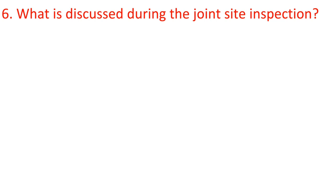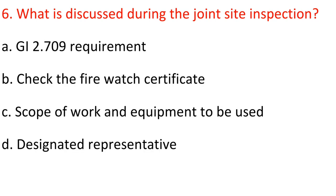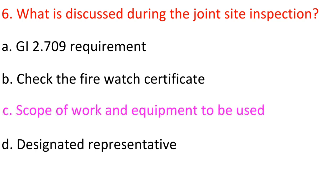Question 6: What is discussed during the joint site inspection? A) GI 2.709 requirement, B) Check the fire watch certificate, C) Scope of work and equipment to be used, D) Designated representative. Answer: C) Scope of work and equipment to be used.